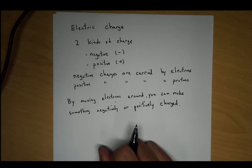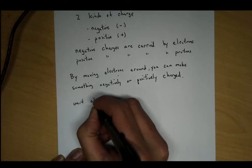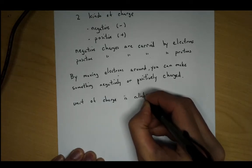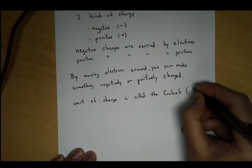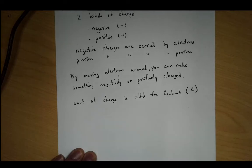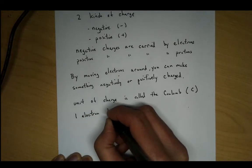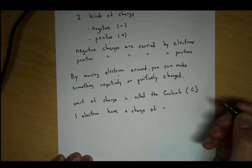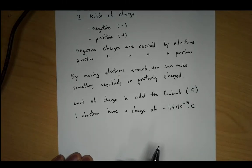In physics, there's a unit of charge called the Coulomb, denoted by the letter C. The Coulomb is actually a very, very large charge — not terribly useful as a unit. For instance, one electron has a charge of minus 1.6 times 10 to the minus 19 Coulombs. It's a very, very small number.